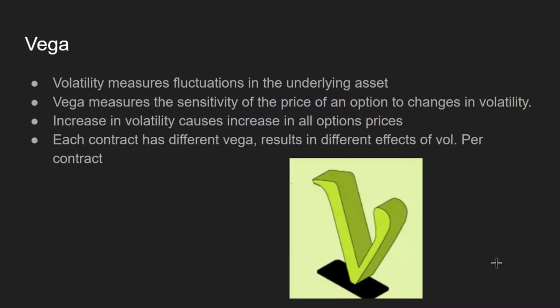Vega is not the same as volatility itself. Volatility measures fluctuations in the underlying asset — things like VXX and VIX. Vega measures the sensitivity of the price of an option to changes in volatility. Basically, an increase in volatility causes an increase in all options prices because options thrive off of volatility — when a stock moves a lot, all contracts will receive a boost.